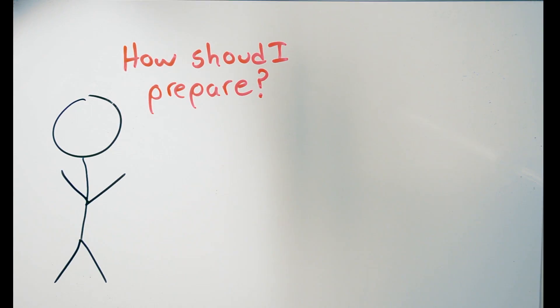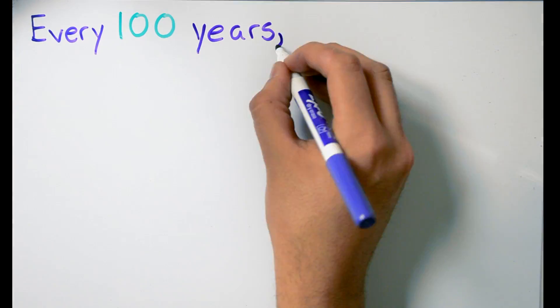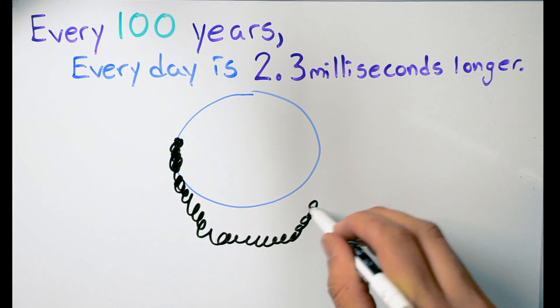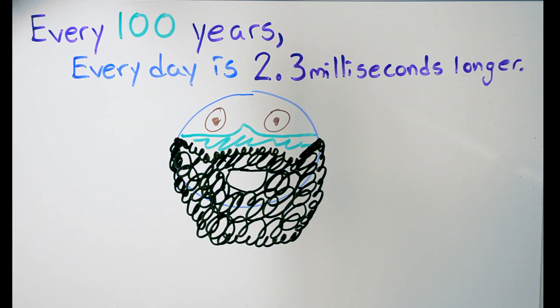But, more importantly, will this ever happen? Well, the Earth's rotation is actually slowing. Every 100 years, the days get longer by about 2.3 milliseconds. So, if this ever does happen, it would be in the very, very distant future.